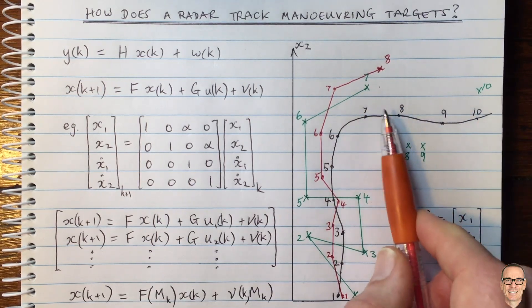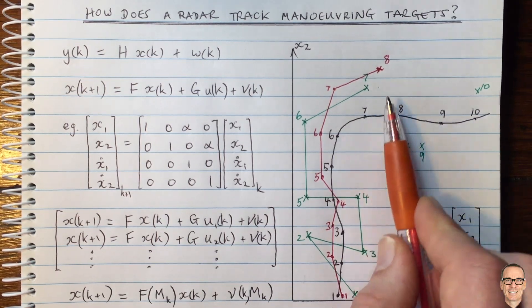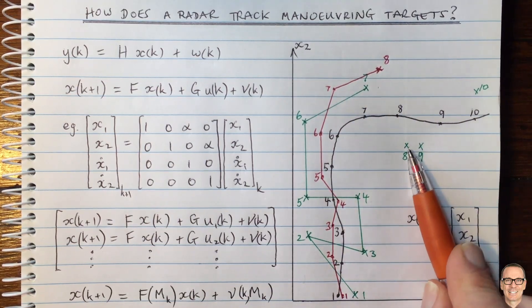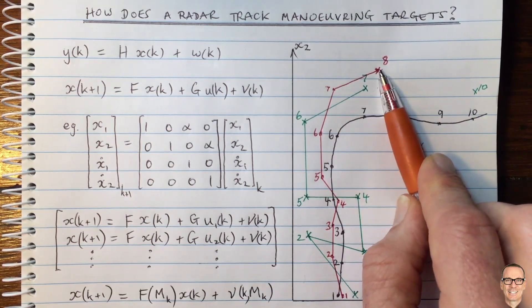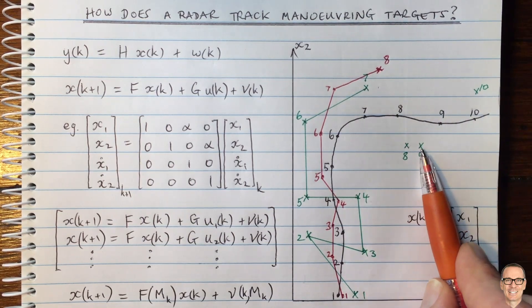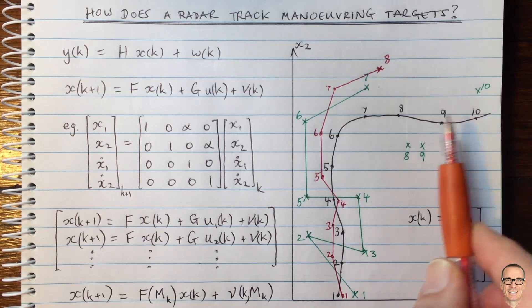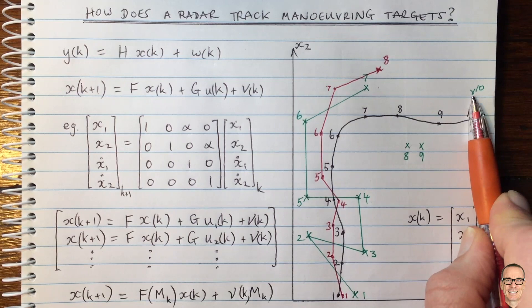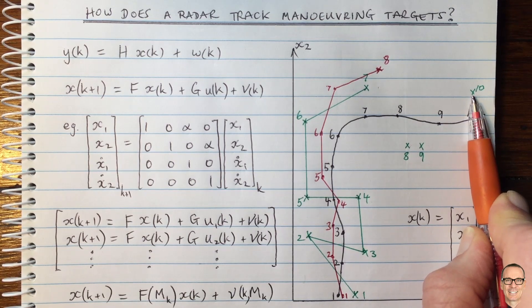Another thing to do is to potentially hold off on your decision. So instead of each time you get a measurement updating your position estimate, you can take multiple measurements into the future and then decide at a time which is before the most recent measurement. This is called smoothing or delayed decision.